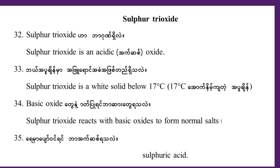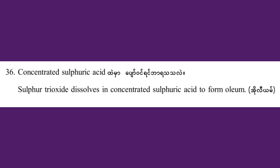Sulfur trioxide is a concentrated, saturated acid. H2S2O7 is a concentrated acid.